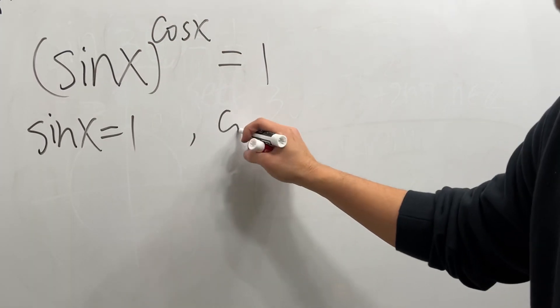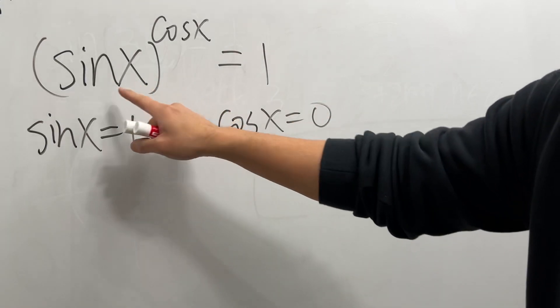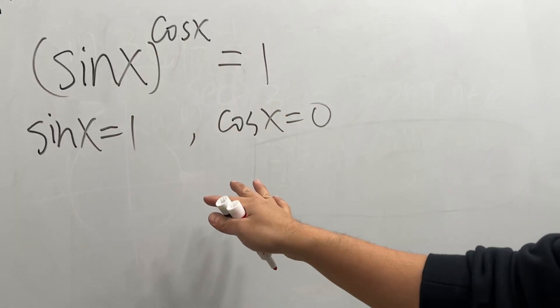Or the other part is cos x is equal to 0. And the truth is, this and that can never be both equal to 0 at the same time, so we are good.